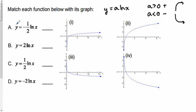So looking at my four options here, I can see I've got two negative graphs. I've got a negative one-half ln x, and I've got a negative two ln x. So those will be paired with either graph three or graph four.